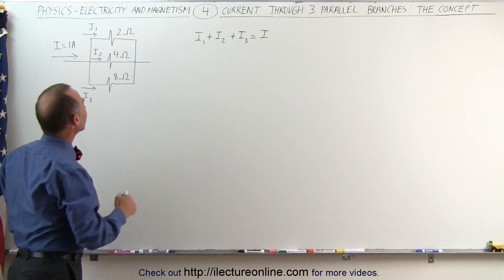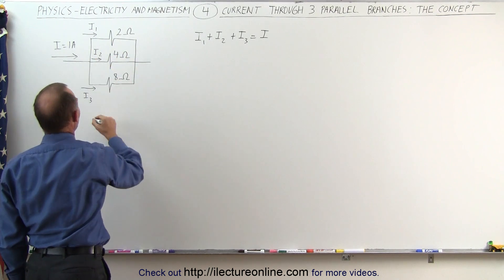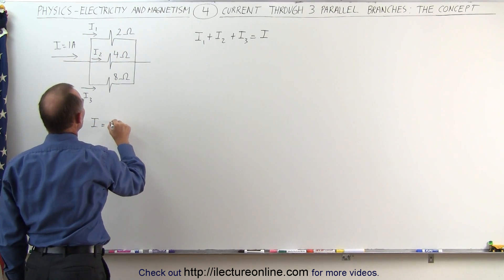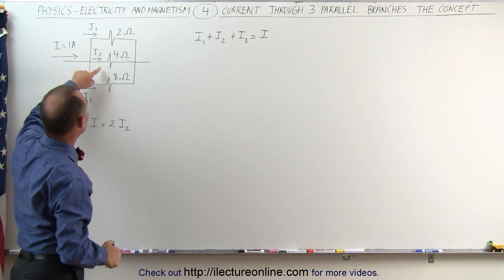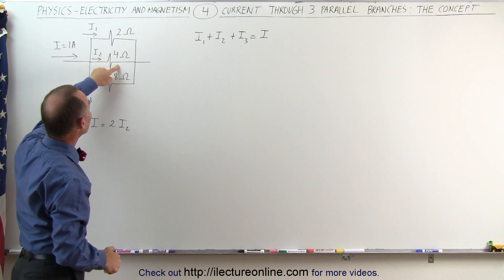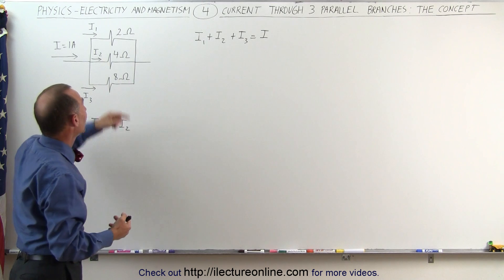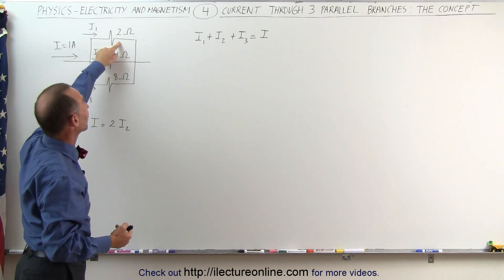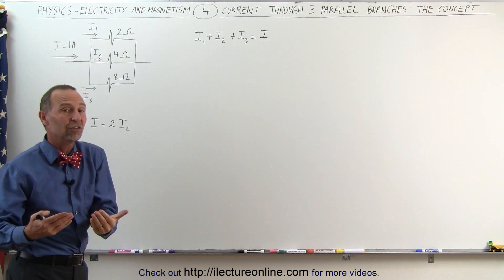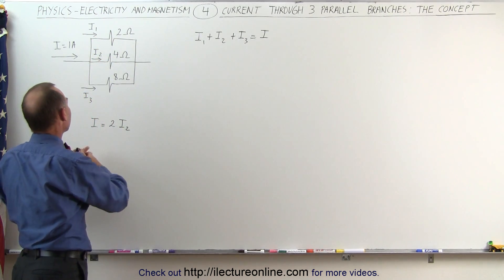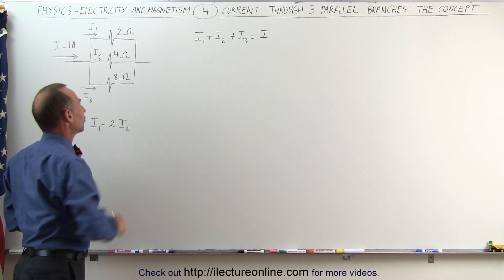If we compare current I1 to current I2, I1 must be equal to 2 times I2. The resistance in the second branch is twice as much as the resistance in the first branch — twice the resistance means half the current. Or, the resistance of the first branch is half that of the second branch, so half the resistance means twice the current. Therefore, I1 is twice I2.